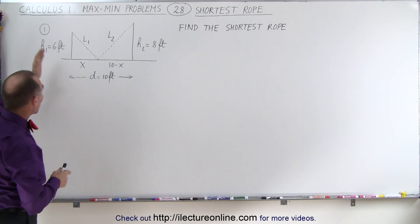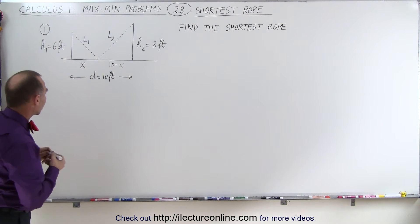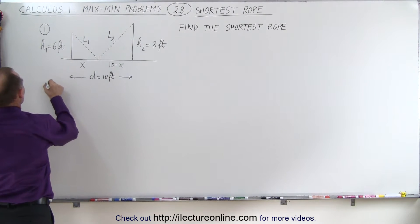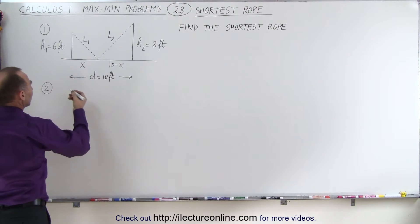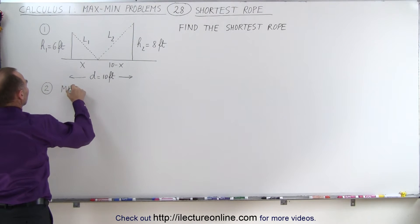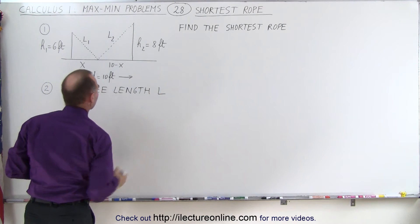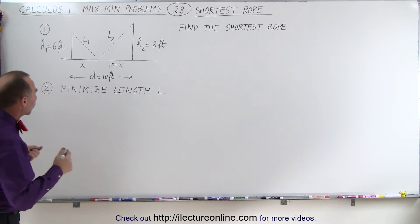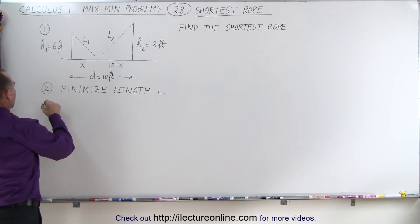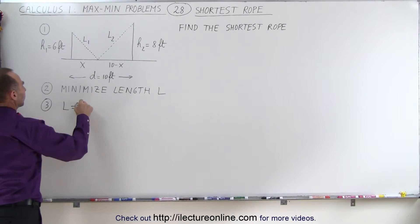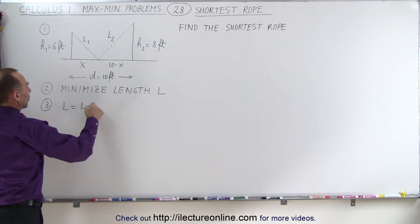We've already drawn the diagram, which is nice, so the next thing we need to do is determine what's being maximized or minimized. In this case we're trying to minimize the length of the rope. We need an equation. The length of the rope is equal to the sum of the two sections, so L1 plus L2.